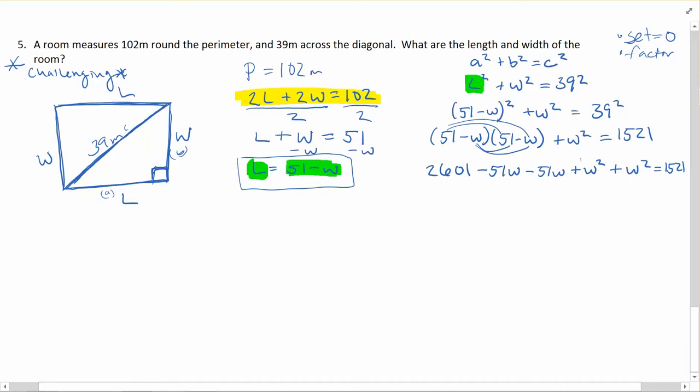Next thing is going to be combining like terms. I can see here I've got two W² so that's going to be 2W². I also have minus 51W minus 51W, that's going to be minus 102W. And then I still have that positive 2601 for the 51 times 51, and all this is equal to 1521. Now that I have expanded, I'm going to subtract off to set it equal to 0. So we'll minus the 1521 from both sides and we're going to get 2W² - 102W + 1080 = 0.